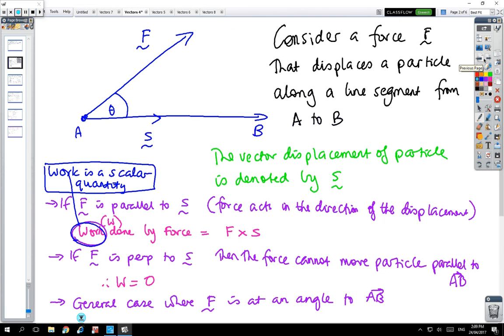For instance, we might have a force acting on a particle so that it gets dragged along a plane from A to B. The vector displacement of the particle is denoted by S. The particle is being dragged along this direction a distance, and the force is another vector acting on the particle.